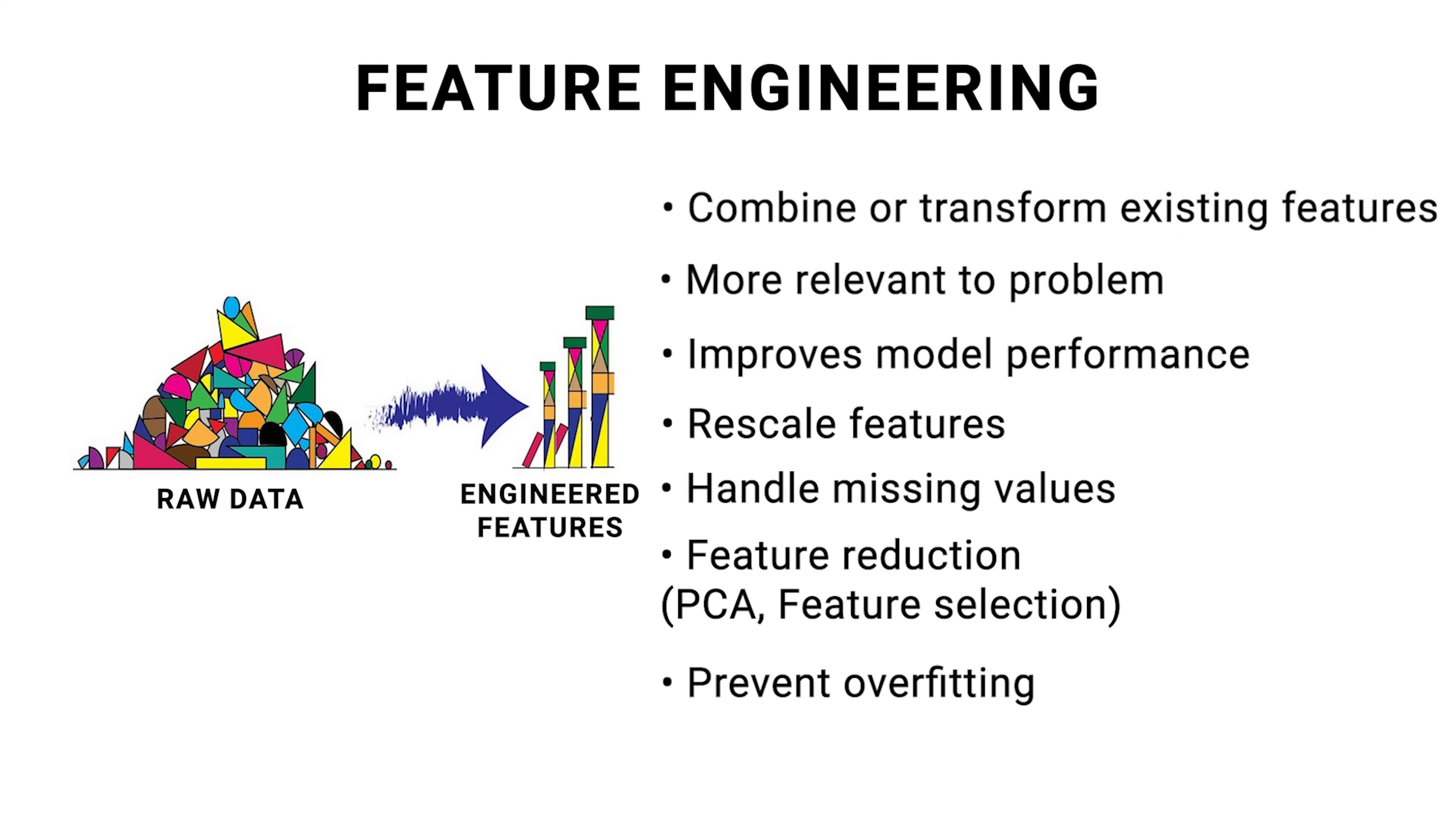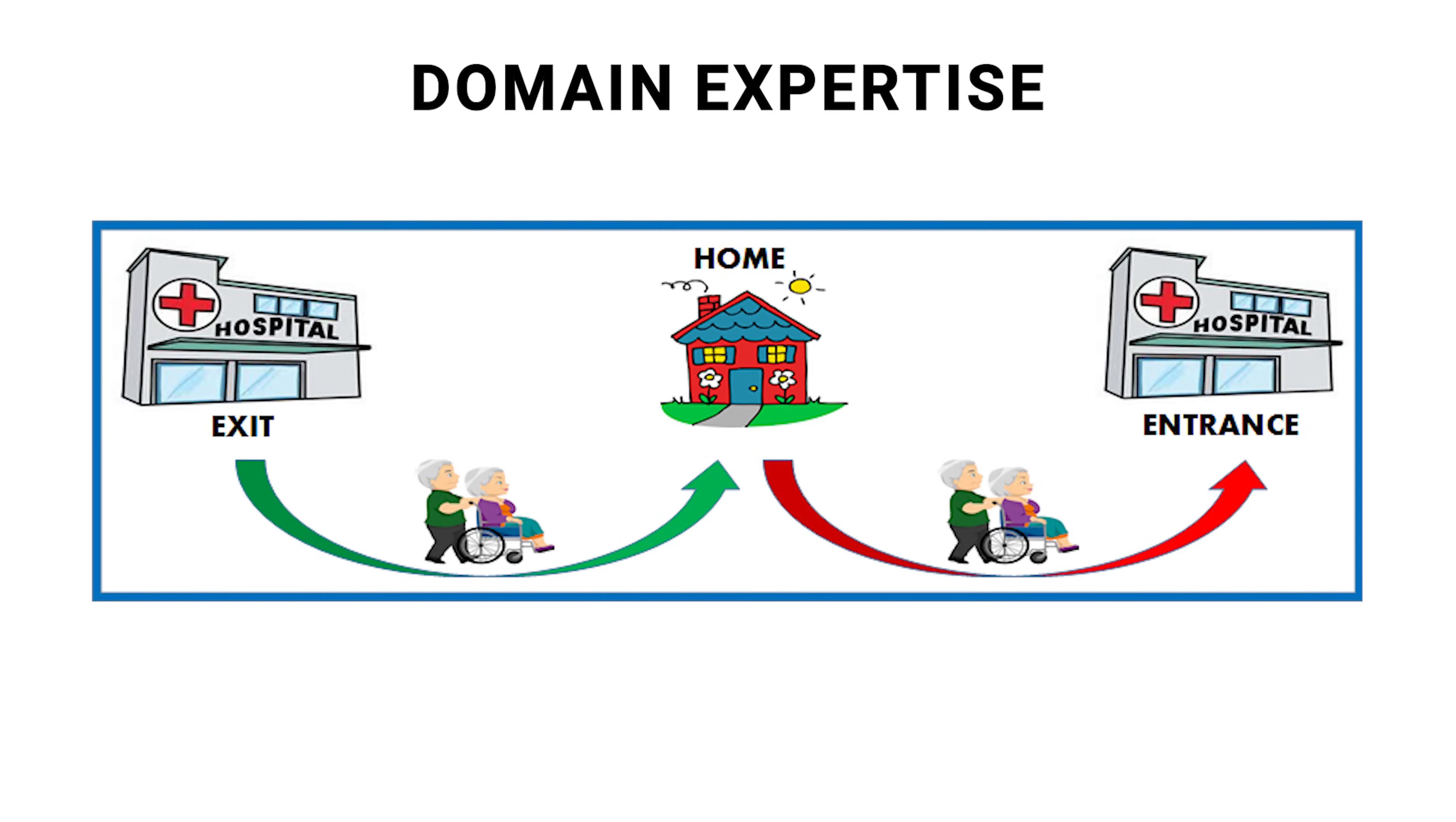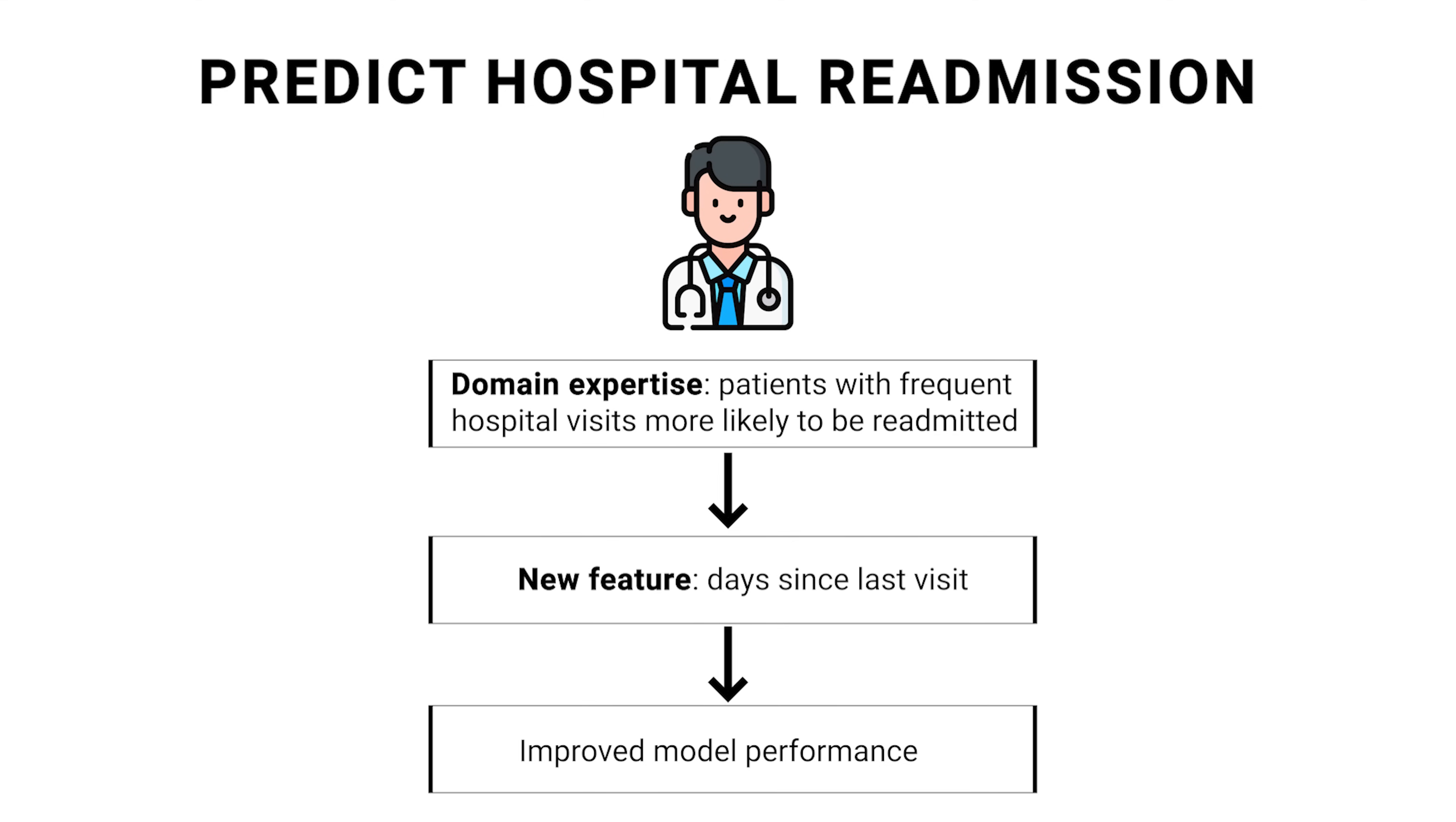You can also use feature engineering to introduce domain expertise into your data and thus algorithm. Suppose you're working on a machine learning model to predict whether a patient will be readmitted to the hospital within 30 days of discharge. Domain expertise from a healthcare professional can guide the creation of new features that significantly improve model performance. Healthcare professionals know that patients with frequent hospital visits are more likely to be readmitted. Using this domain knowledge, you can create a feature that calculates the time in days since the patient's last hospital visit. This could serve as a strong predictor for readmission risk.